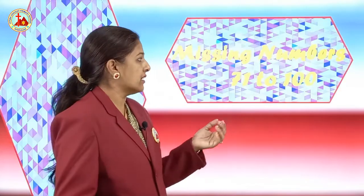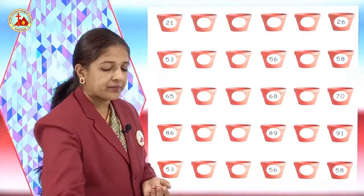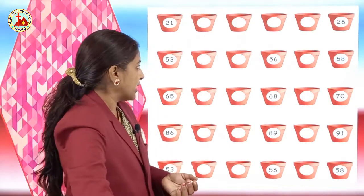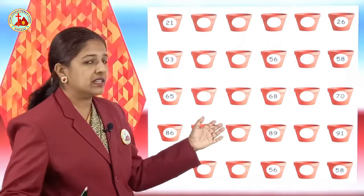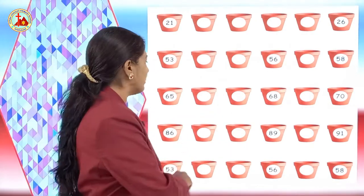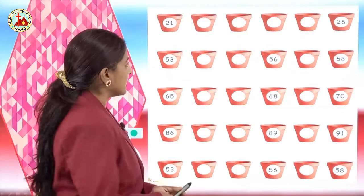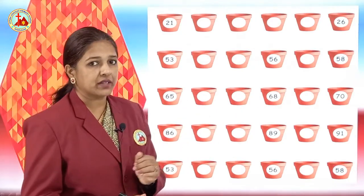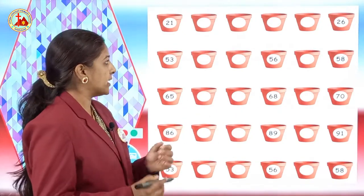You all know the numbers because from 1 to 100 we have learnt to say the numbers. Now you know the numbers, so it is very easy for you to write the missing numbers. Children, here you can see some numbers are written on the pot over here. We are going to write the missing numbers. So be ready.